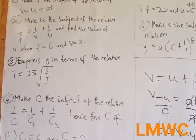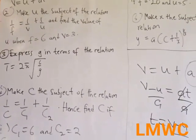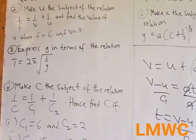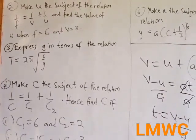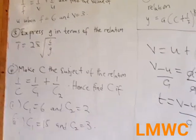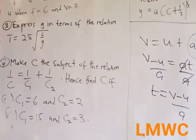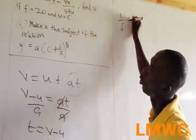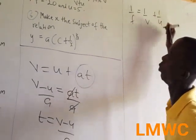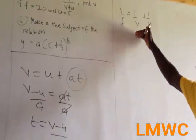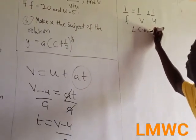Question 2: Make u the subject of the relation 1/f = 1/v + 1/u. You have been asked to make u the subject, or they can say find the value of u when f = 6 and v = 3. The first thing you should do is make u the subject. Now, 1/f = 1/v + 1/u. Always if you are given something like this, the LCM becomes f·v·u.